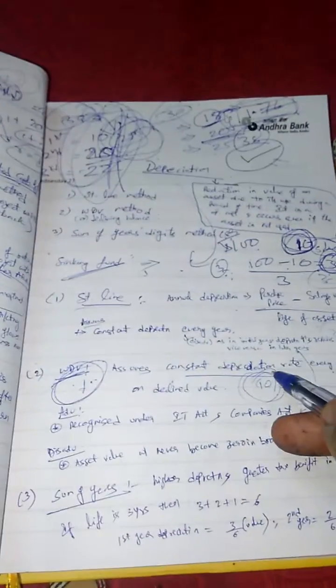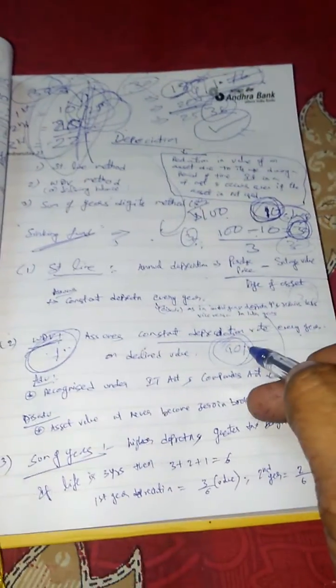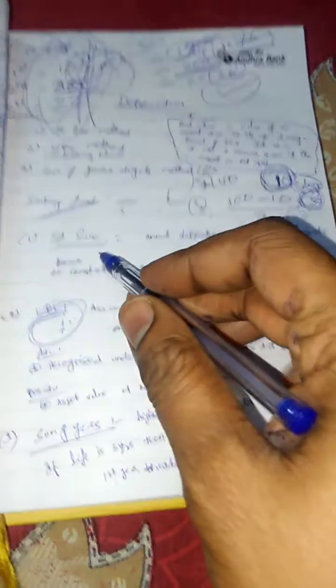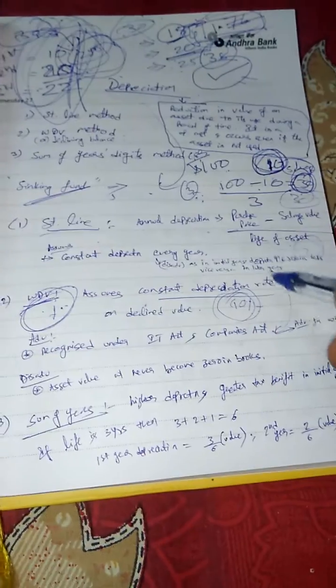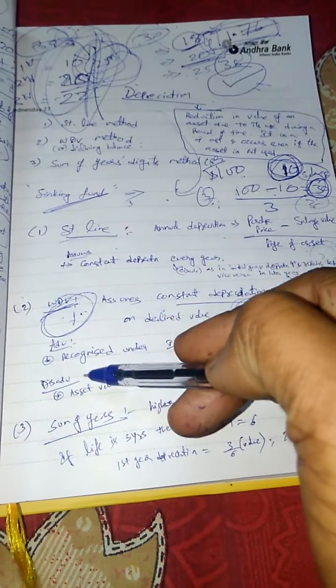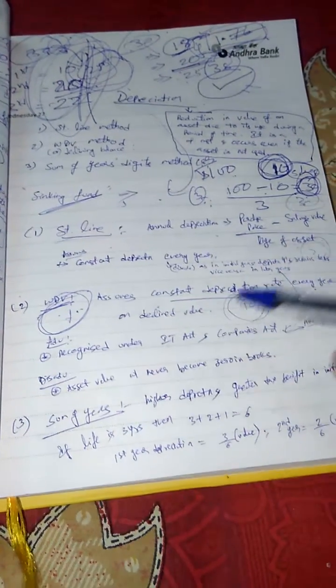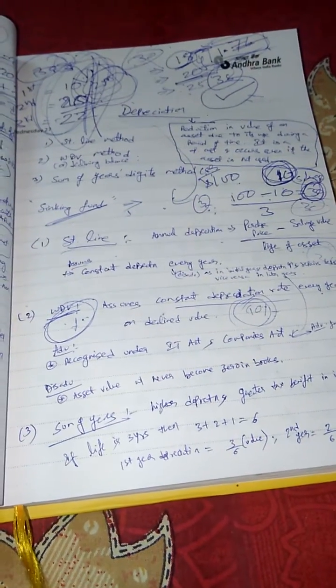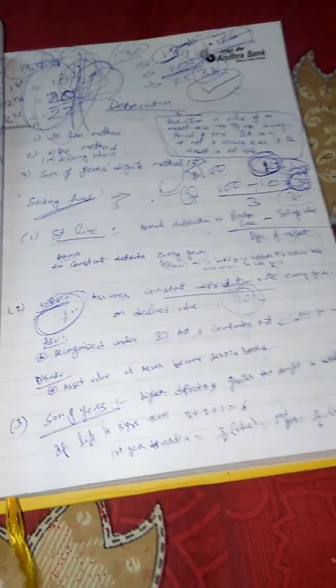Return on value method. In this, I am assuming the depreciation rate as constant — constant depreciation rate. In straight line method, depreciation amount remains constant throughout the year, whereas in return on value method, depreciation percentage or depreciation rate remains constant.